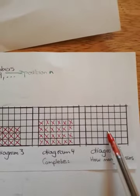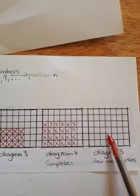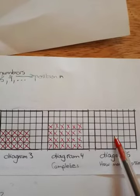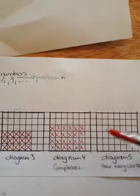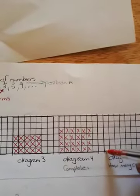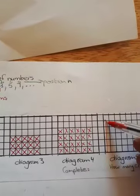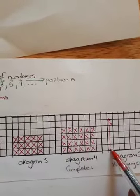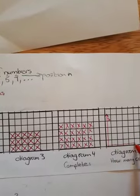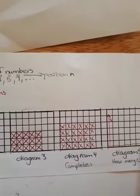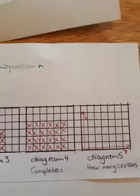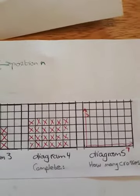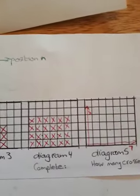They now ask: how many crosses will there be in diagram five? We have four rows in diagram four, so diagram five must have five rows. And since diagram four had six crosses across, diagram five must have seven crosses. But drawing these crosses each time is going to be a very long process.